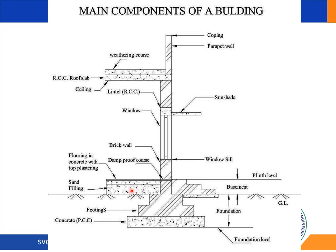Superstructure walls are the vertical components of any structure. Wall masonry can be done using stones, bricks, or concrete blocks. Walls provide protection against external environmental agencies. Doors and windows are provided in the walls for ventilation and access. Walls may be single brick or double brick; a single brick wall has a thickness of 100 mm and a double brick wall has a thickness of 230 mm.